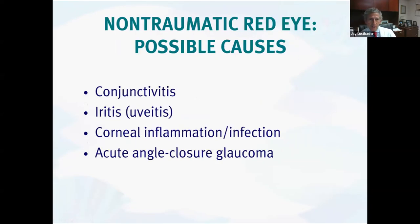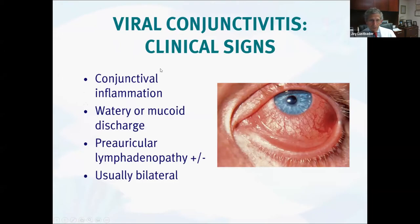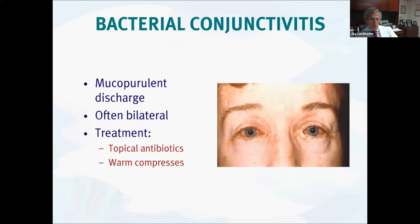Now let's talk about red eye and some of the more common causes you'll see — from mild things like conjunctivitis to more severe things like uveitis, corneal infection, or acute angle closure glaucoma. Viral conjunctivitis is the most common. The discharge is usually watery, not thick. Often if viral, they'll have preauricular lymphadenopathy and it's often bilateral. In contrast, bacterial conjunctivitis has a thicker, mucopurulent discharge — that we do treat with topical antibiotics and warm compresses. The viral form, unfortunately, like many viral diseases, we just let it run its course with symptomatic treatment like artificial tears.